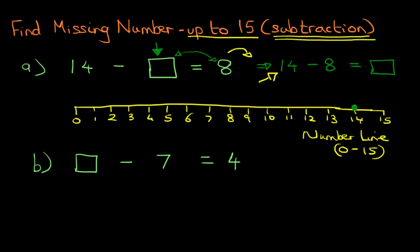Now how many jumps are we going to take? We are going to take 8 jumps. And which direction are we going? Well, it is subtraction, and as we know, subtraction is going to the left. So we are going to take 8 jumps. Count with me. Starting at 14, we have got 1, 2, 3, 4, 5, 6, 7, and 8.